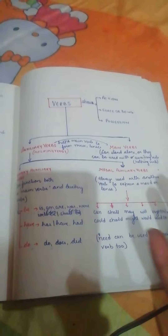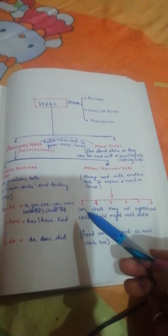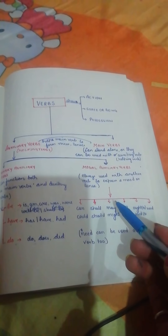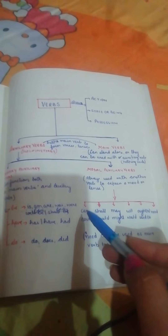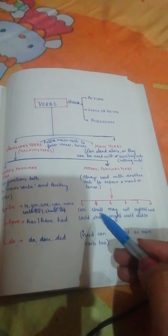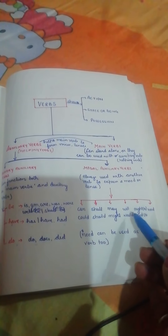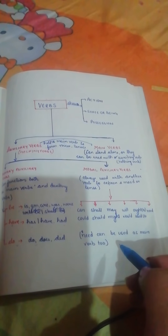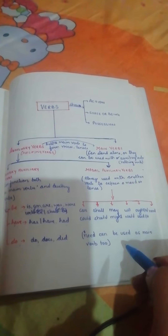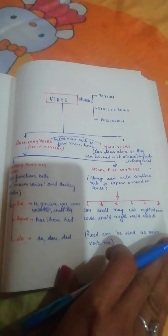I'm not going to discuss modal auxiliaries in detail here — that will be a separate chapter. But the modal auxiliary verbs are: can, could, shall, should, may, might, will, would, ought to, used to, need. Note that 'need' can also be used as a main verb. Today I'm going to discuss the usage of BE only.